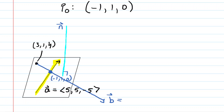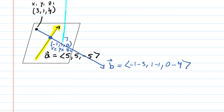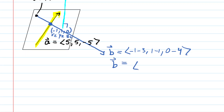You can easily find the vector representation of a vector passing through two points by labeling the coordinates of the first point (x₁, y₁, z₁) and the second point (x₂, y₂, z₂), then subtracting the second set of coordinates by the first. For x, we have negative 1 minus 3. For y, we have positive 1 minus 1. For z, we have 0 minus 4. This gives us vector B equal to (−4, 0, −4).